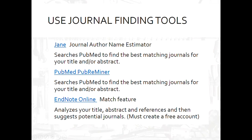They also have journal finding tools. All of these tools work basically the same: you put in your title, abstract, and sometimes your reference list as well. It will look at the keywords in your title and abstract and suggest journals that may match your topic. Just take it with a grain of salt and add that to your list. At this point, you're just compiling a list of possible places — you haven't yet evaluated these resources.